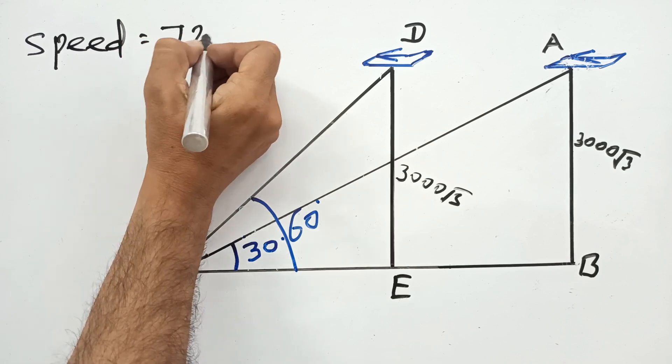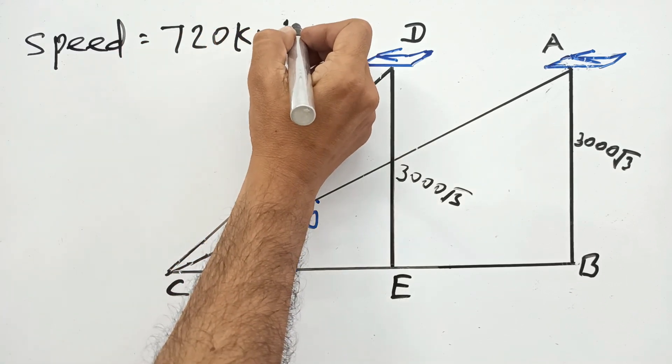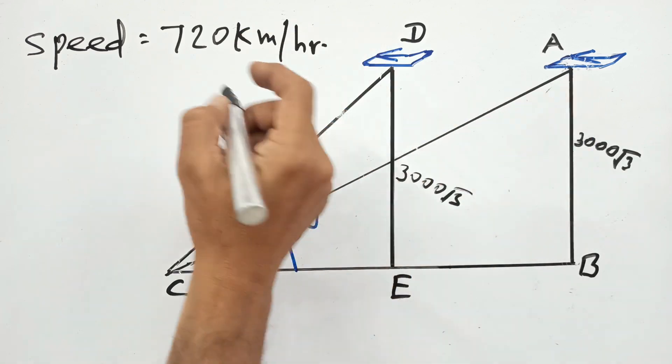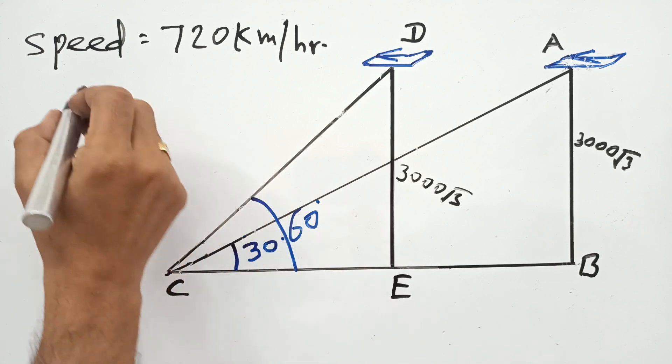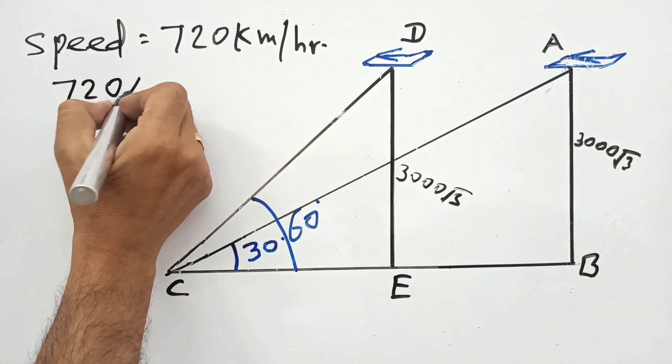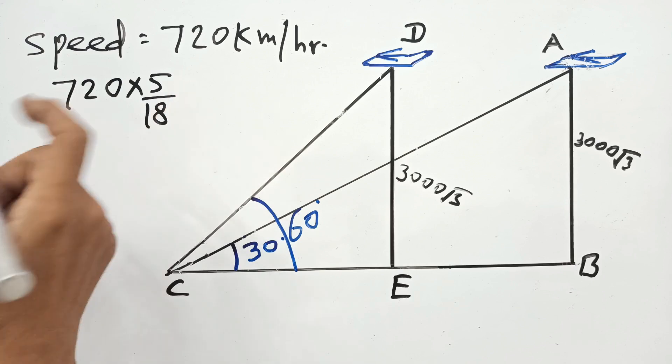Given that the speed is constant 720 kilometers per hour in both situations. Now first of all you convert into meters per second because height is given in meters. So it is very simple, multiply by 5/18 to convert into meters per second.